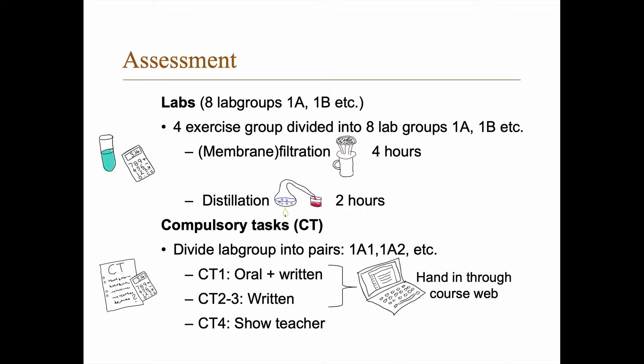The assessment in this course, well, we have labs and we have eight lab groups. And so we have four exercise groups that are divided into eight lab groups, one A, one B, etc. And the first lab is the membrane filtration lab, which takes four hours and the distillation lab takes two hours. And more on that later. There are compulsory tasks that you also have to go through and then you divide, we divide the lab groups into pairs. So one A one is a group of two students, one A two is a group of two students, etc. For compulsory task one, it's both oral and written assessment. For compulsory task two to three, it's written and to compulsory task four, you show the teacher your results and discuss with the teacher. And then we let you pass if you have done things nicely.